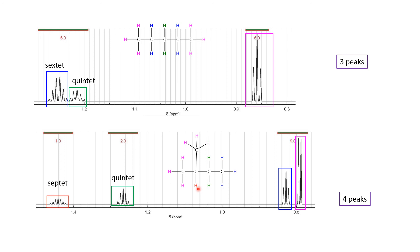Hopefully this analysis of the pentane isomers made some sense. I'm not going to be as detailed or painstaking as I describe future splitting patterns, but hopefully it makes sense where all these peaks came from.